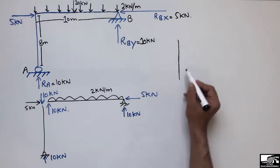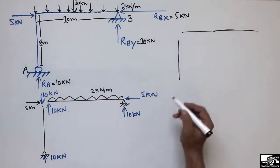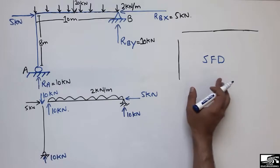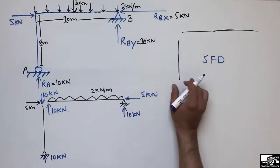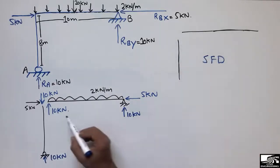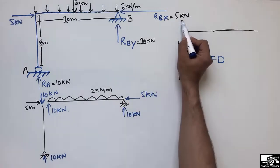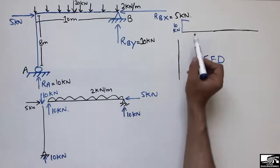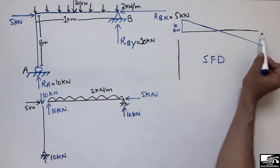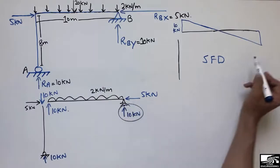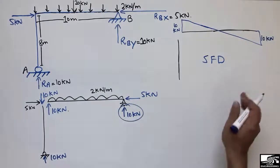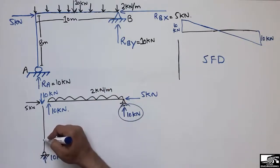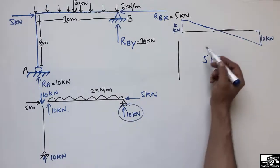Now I will draw the shear force diagram for this frame. Since there is no load acting on the column, the shear force for the column is zero. For the beam, the load acts upward at one end giving 10 kN, then decreases linearly due to the distributed load until it reaches −10 kN at the other end, where the 10 kN reaction from the hinge support acts. There is no shear force diagram contribution from the column since no lateral load or roller resistance is present there.